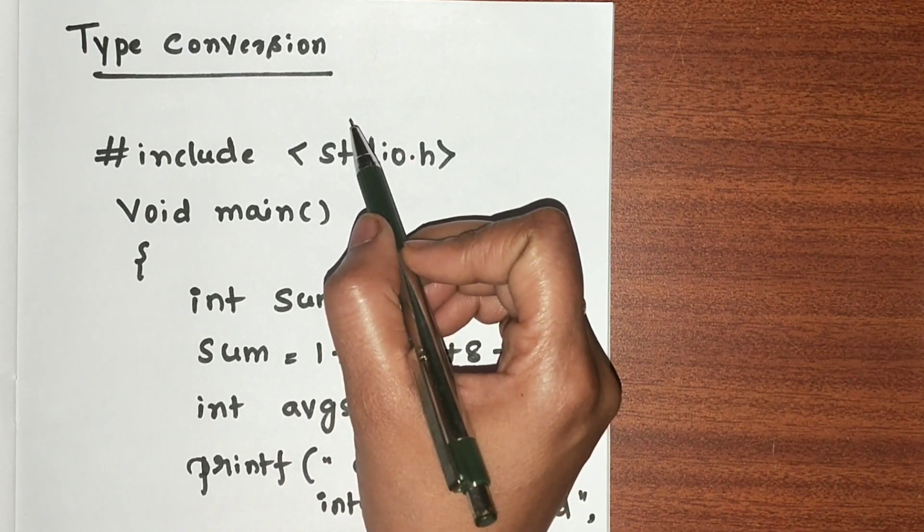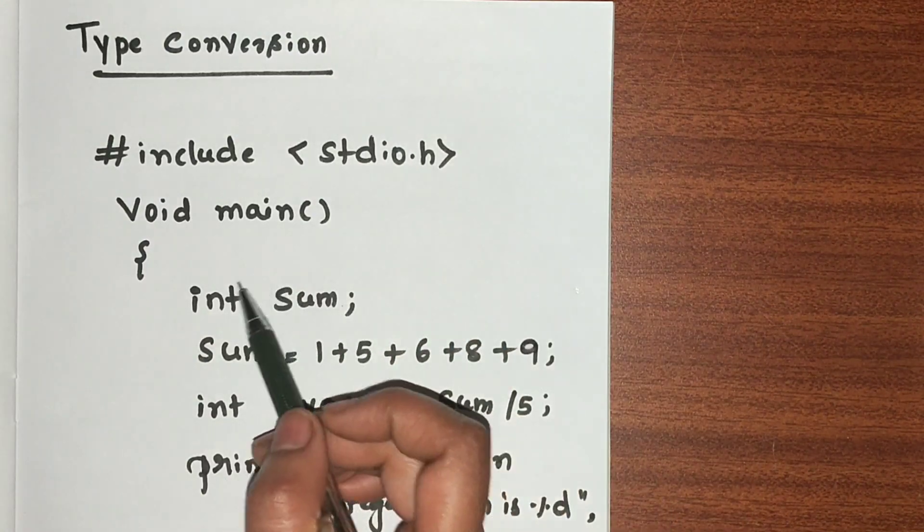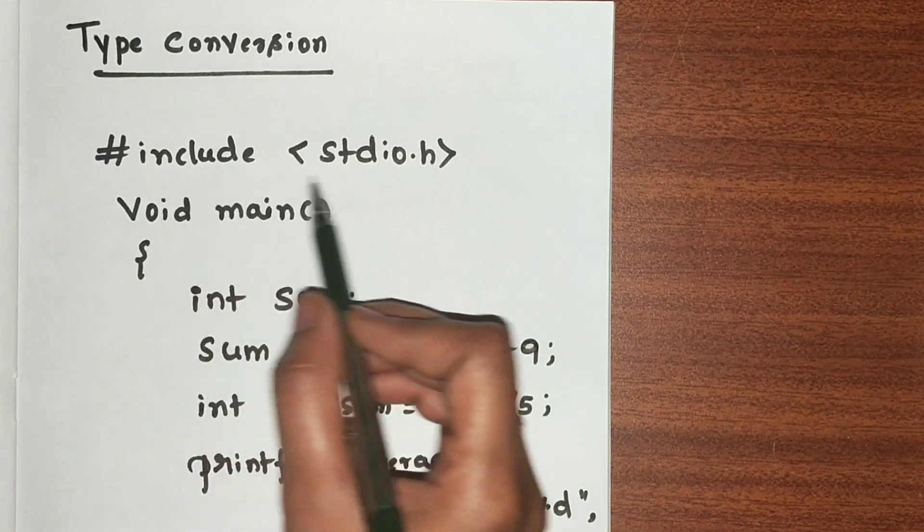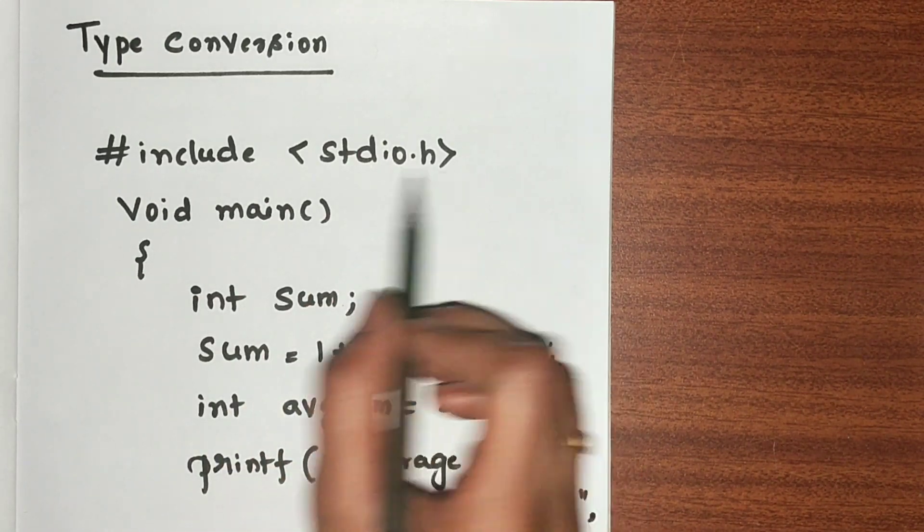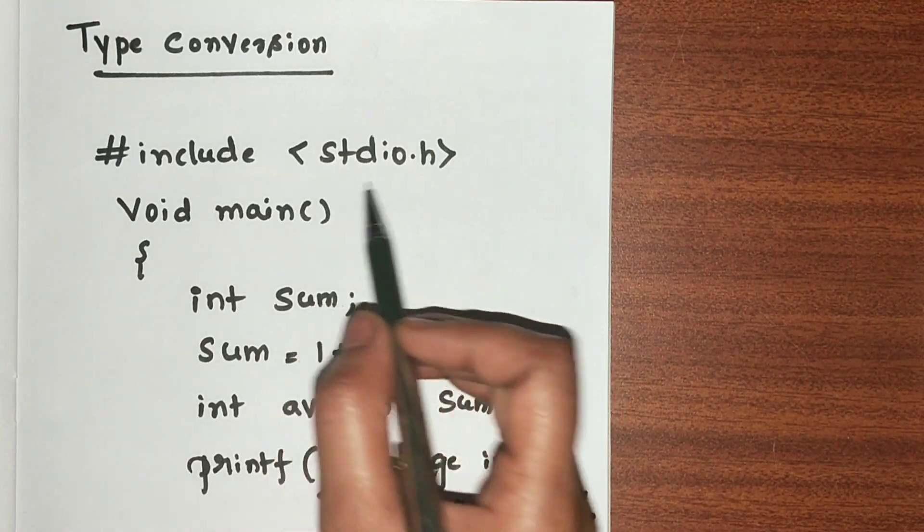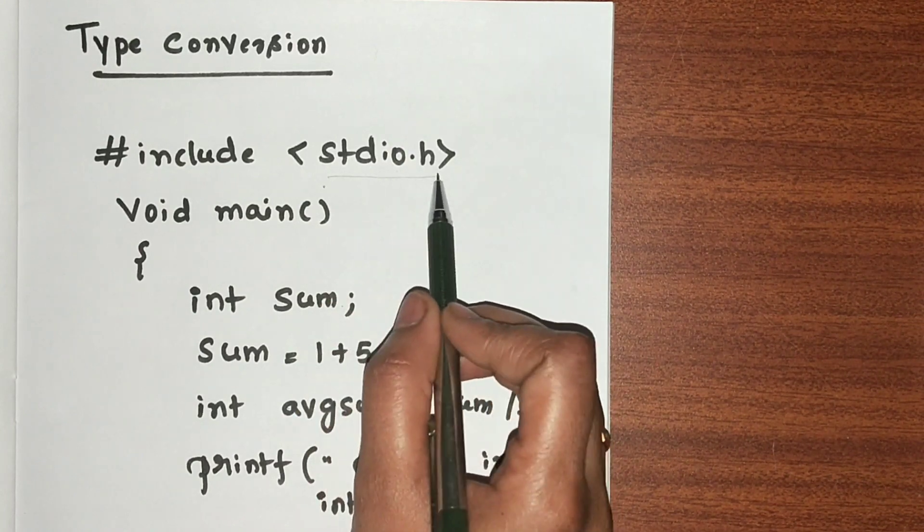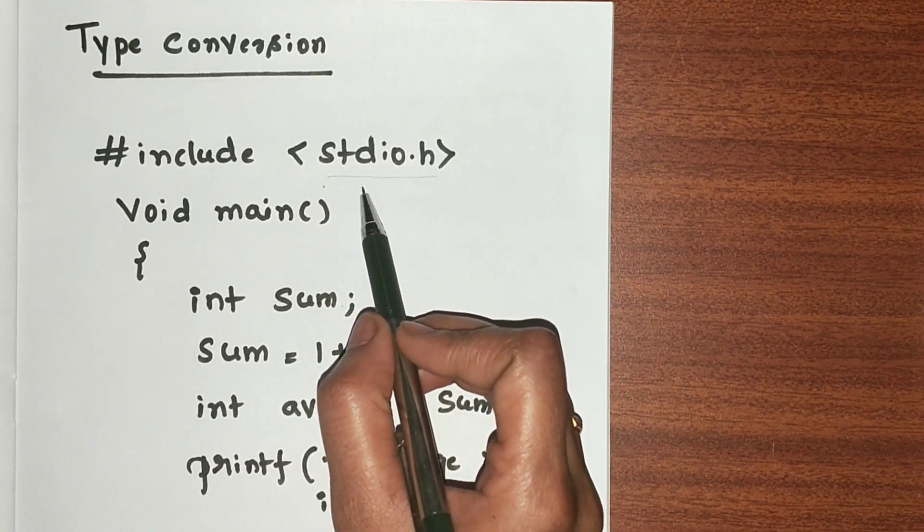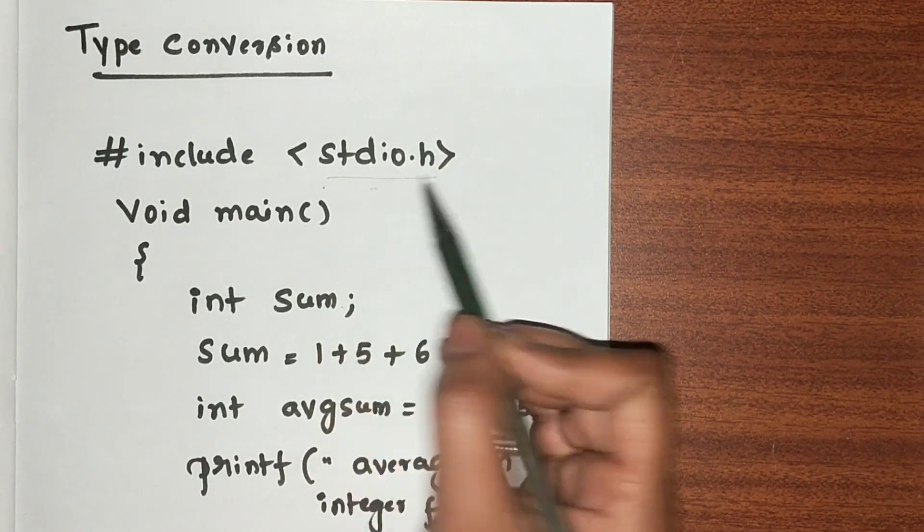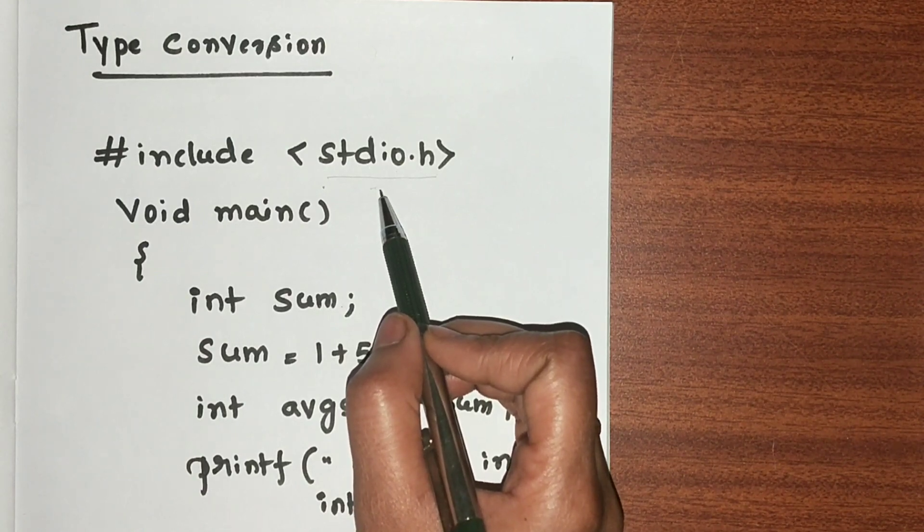Now let us see the program. The very first line is #include <stdio.h>. This is a preprocessor directive where we are including the standard input output header file. The purpose of including this header file is to support the printf and scanf functions in our program.